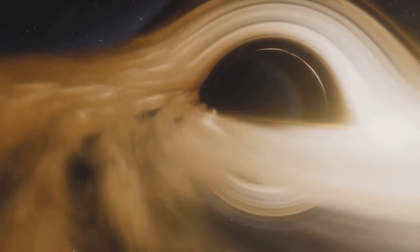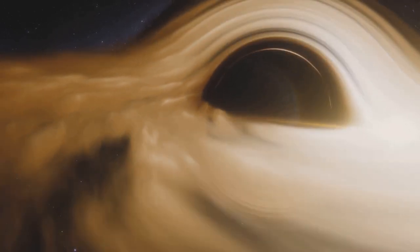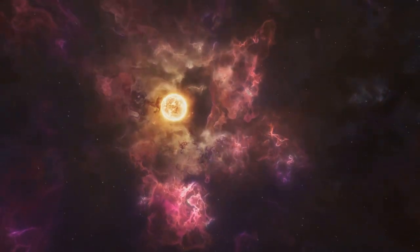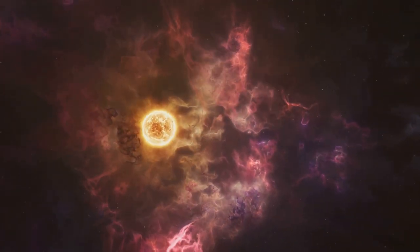As these particles begin to coalesce, gravity plays its part, pulling them closer together. This gravitational collapse forms a protostar, a hot, dense core that will eventually become a star.